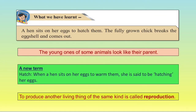What did we learn earlier? A hen sits on eggs to hatch them. The fully grown chick breaks the eggshell and comes out. The young ones of some animals look like their parents. We learned a new term: hatch. When a hen sits on her eggs to warm them, she is said to be hatching her eggs. To produce another living thing of the same kind is called reproduction.